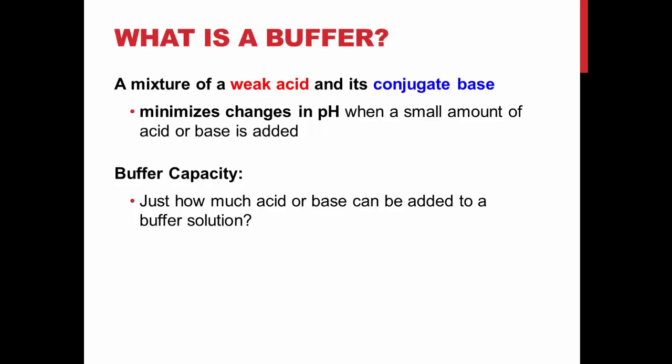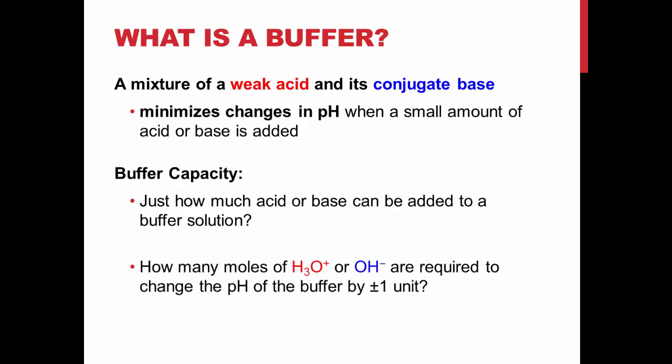The amount of acid or base that can be added without significantly changing the pH is called the buffer capacity. The capacity of a buffer is specifically described as being the number of moles of hydronium or hydroxide ions required to change the pH of the buffer solution by plus or minus one pH unit.